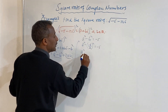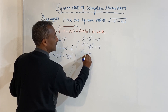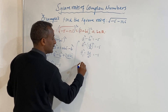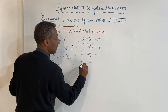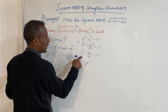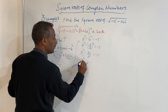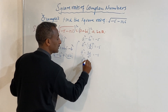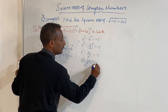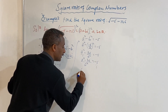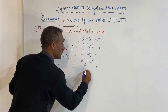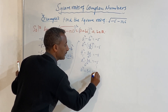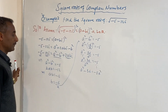Squaring: a squared minus 36 over a squared equals minus 5. Multiplying through by a squared gives a to the power of 4 minus 36 equals minus 5 times a squared. Rearranging: a to the power of 4 plus 5a squared minus 36 equals zero.